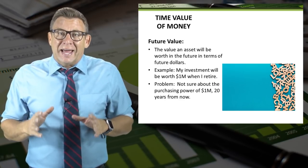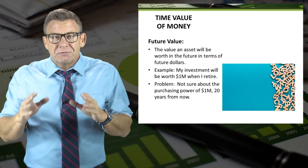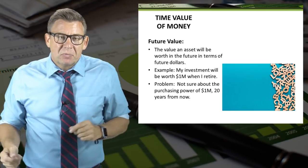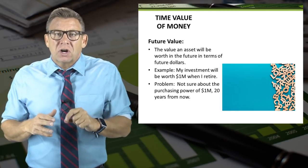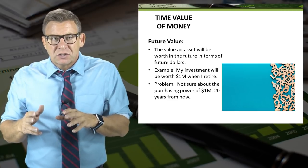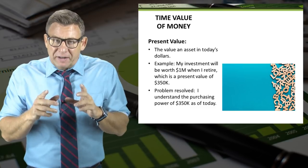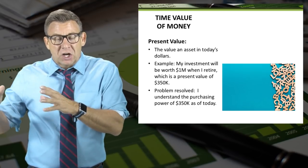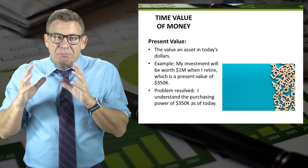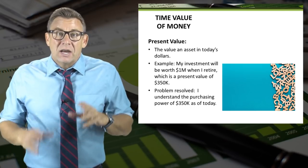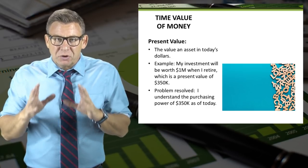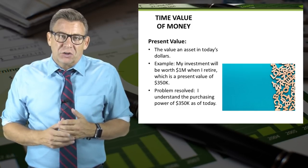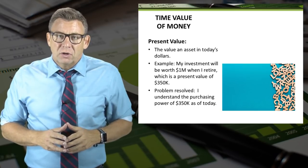Future value is the value an asset will be worth in the future in terms of future dollars — for example, an investment will be worth $1 million when I retire. The problem with future value is we aren't sure about the purchasing power of $1 million 20 years from now. Present value is the value of an asset in today's dollars. If that investment has a present value of $350,000, the problem is resolved because we understand the purchasing power of $350,000 today. In accounting, we only use present value for our calculations; finance uses future value, but accounting does not.